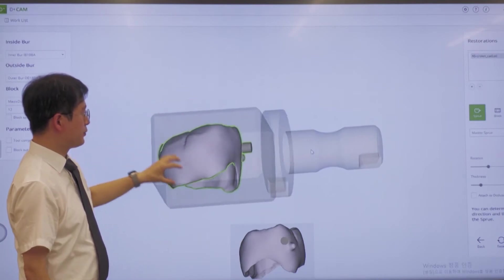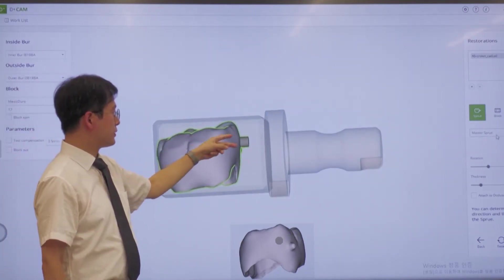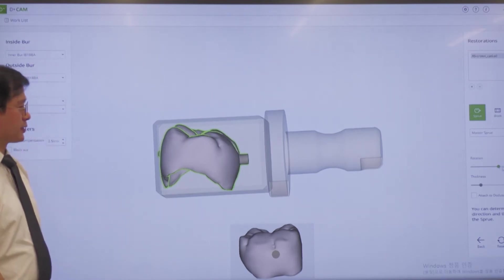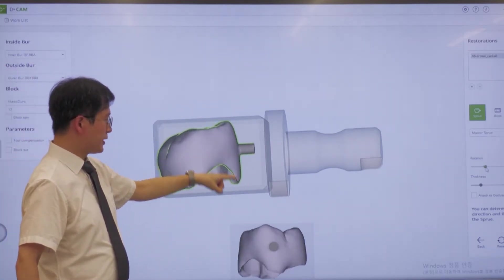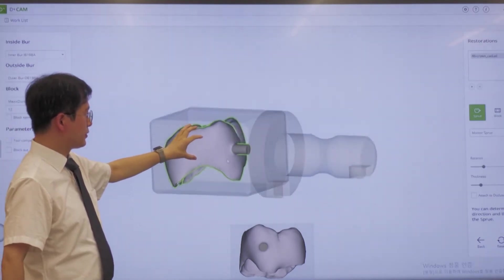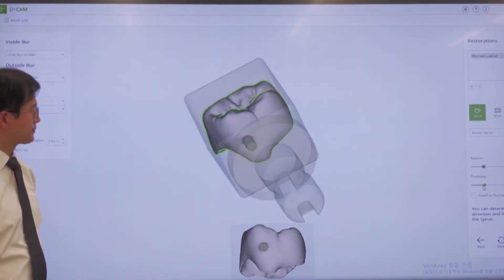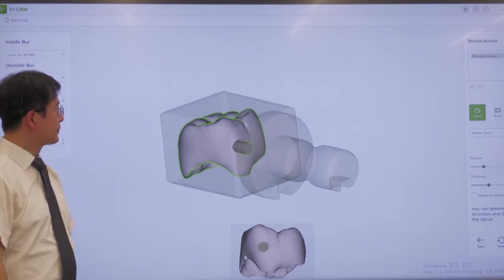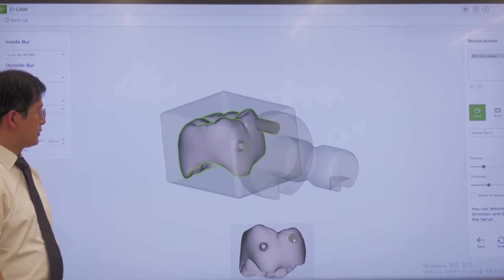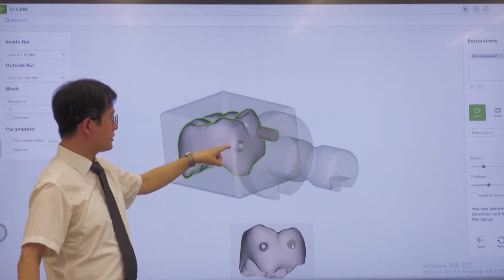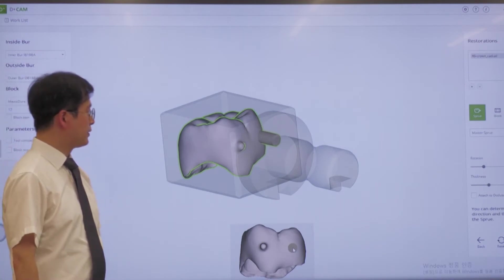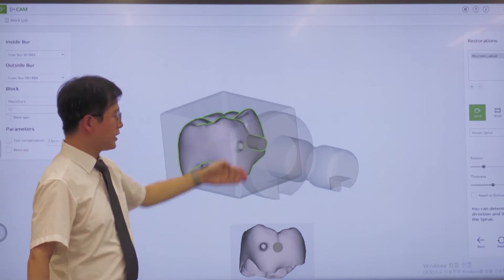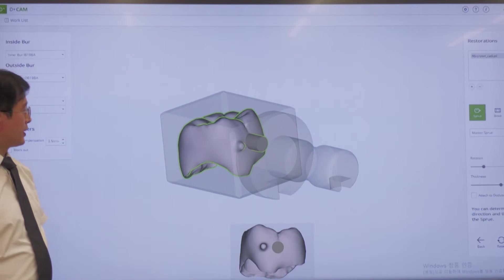We have to select the best position that can hold the final product. We can increase or decrease the thickness of the connection part. This is a buccal wall, so we do not set the connection part here because we have to grind it out. We have to preserve this detail.